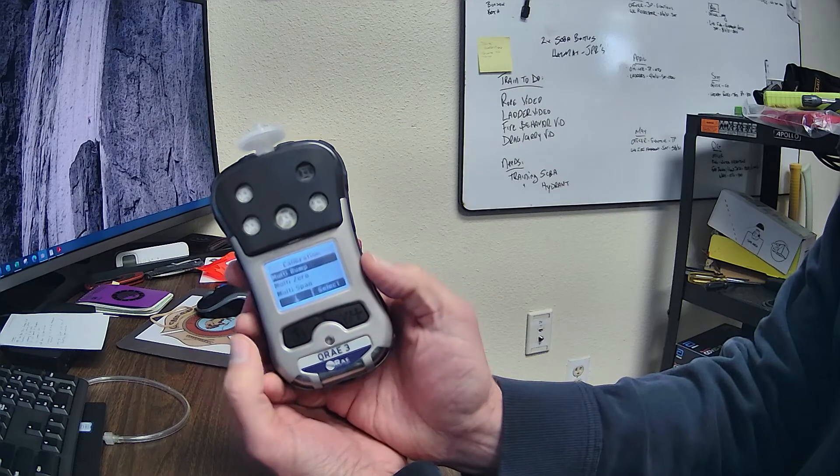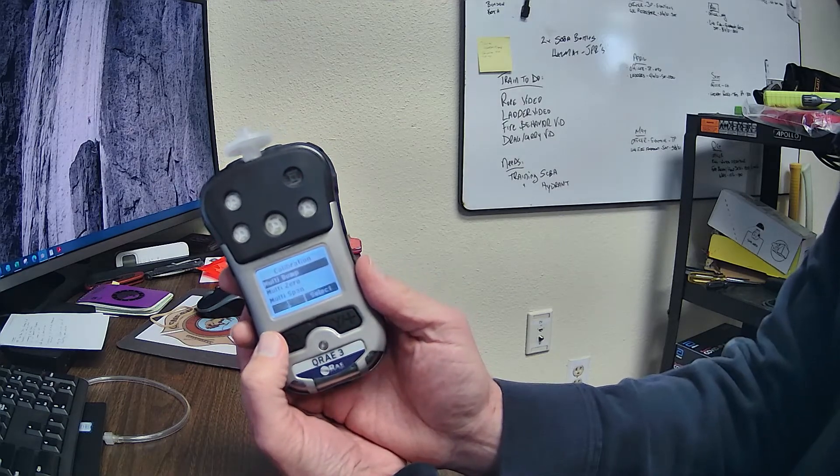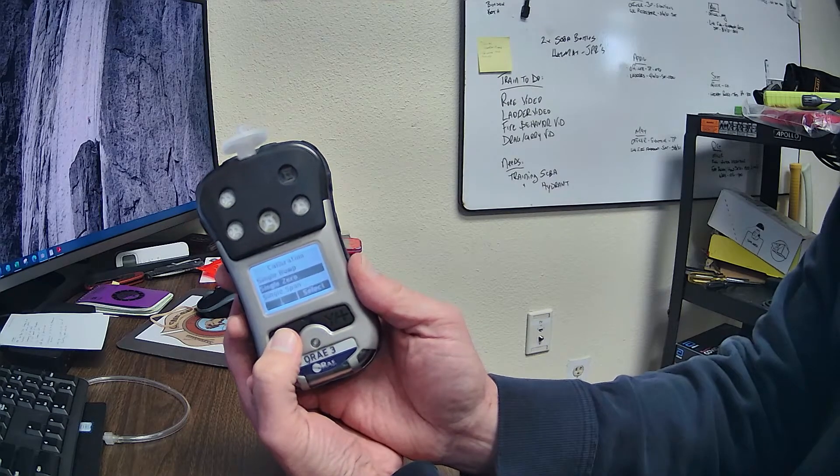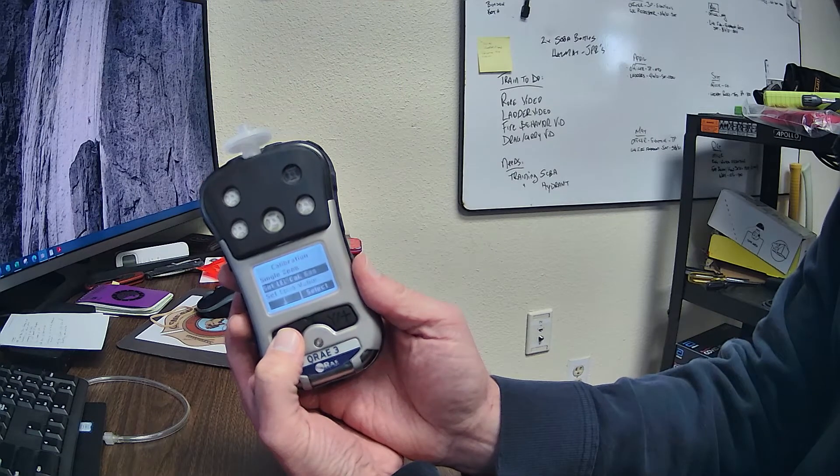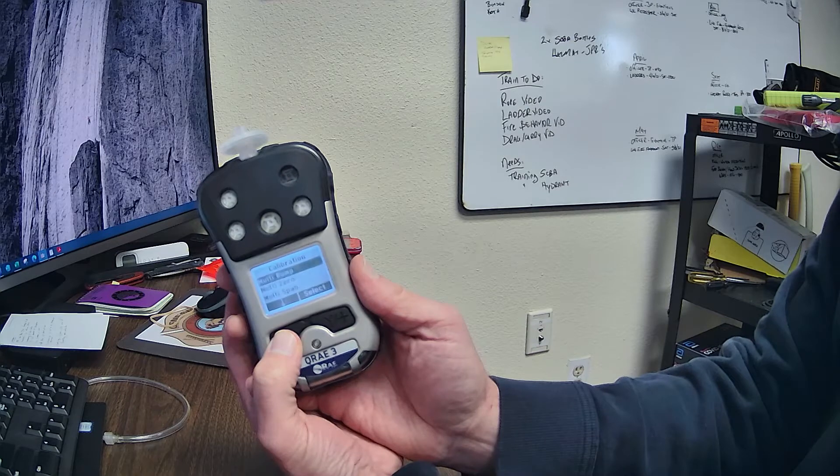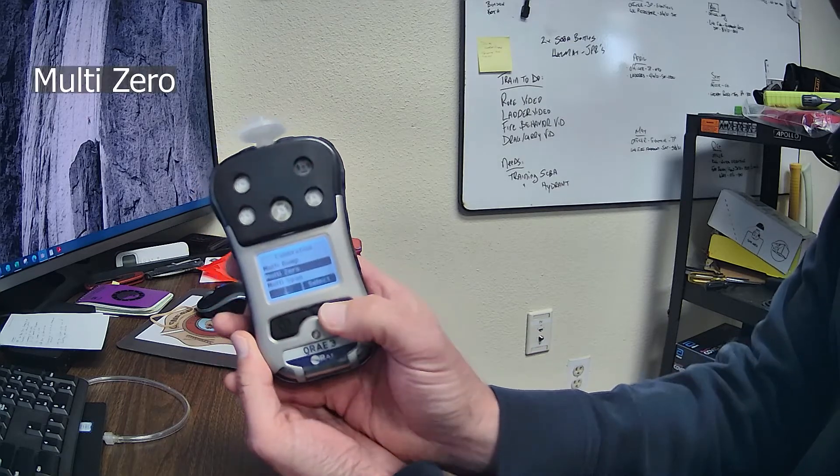So, we got there, we hit the right button. All right, so we got the multi-bump, the multi-zero, or the multi-span, and you can select which one you want. Single zero, single span, set the LEL calibration gas, we can exit. The first thing we're going to do is the multi-zero. That's always first.